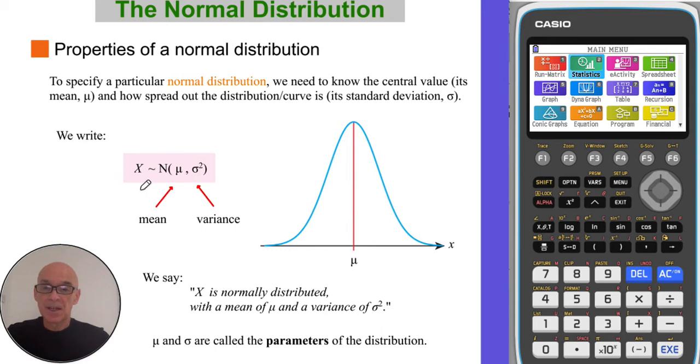When we write x follows a normal distribution with mean and variance, notice the variance is the number written in the brackets. We say x is normally distributed with a mean of mu and a variance of sigma squared. Mu and sigma, the mean and standard deviation, are called the parameters of this distribution.